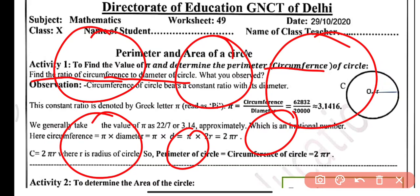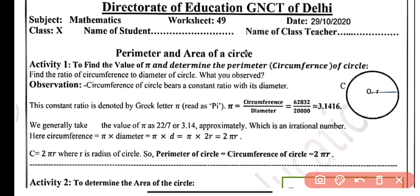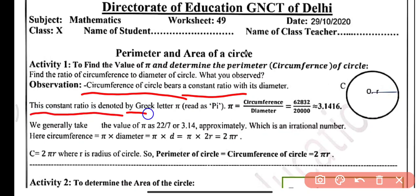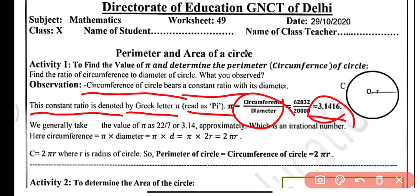We have to find the ratio of circumference and diameter and observe what happens. Each time the ratio of circumference of circle to the diameter is a constant ratio. Circumference and diameter give a constant ratio, and this constant ratio is denoted by the Greek letter pi. Pi is approximately equal to 3.1416, and we generally take the value of pi as 22/7 or 3.14 approximately.